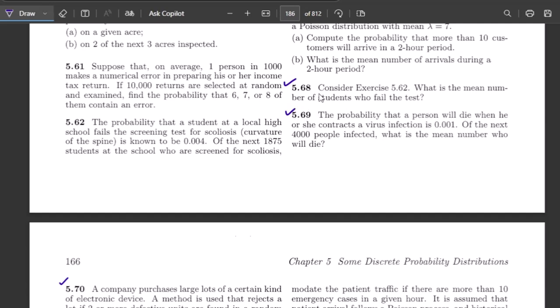So what is the statement of question 5.68? Consider exercise 5.62. What is the mean number of students who fail the test? So what was the statement of question 5.62? The probability that a student at a local high school fails the screening test for scoliosis, curvature of the spine, is known to be 0.04.